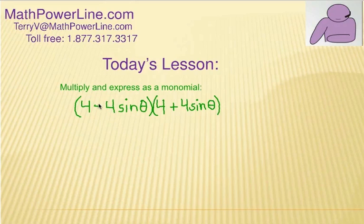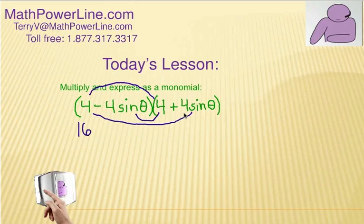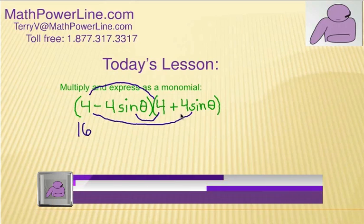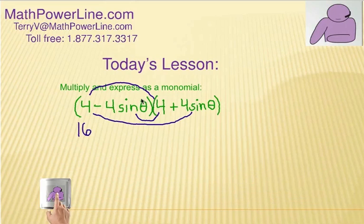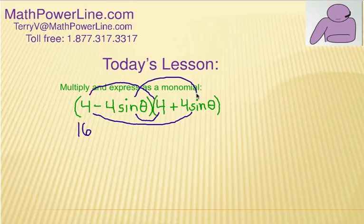Alright, we're going to be using the FOIL method here. Let's do the first terms multiplied together: 4 times 4 would be 16. Then we have the inner terms, which would give us negative 16 sine theta, and the outer terms, which will give us positive 16 sine theta. Those would be opposite terms, so they would drop out. Finally, we would have this term multiplied by that term, which will give us negative 16 sine squared theta.